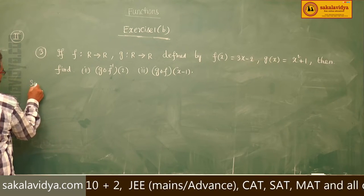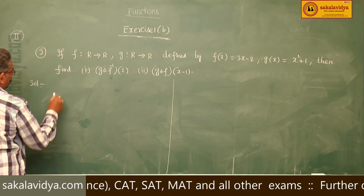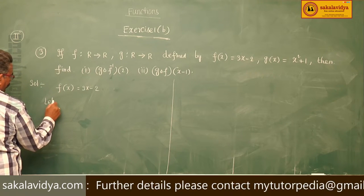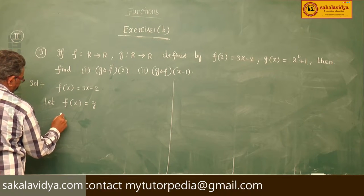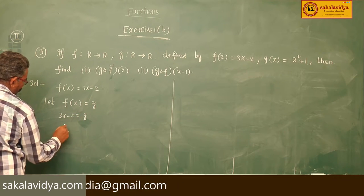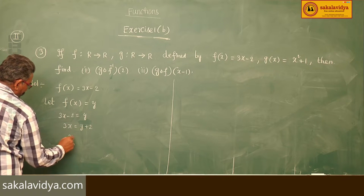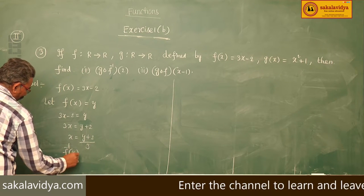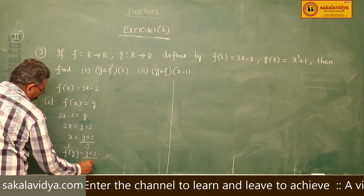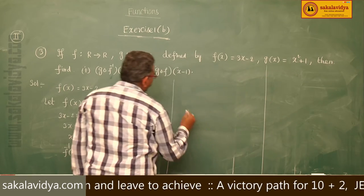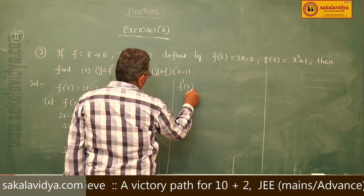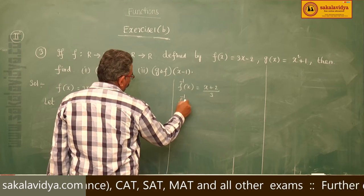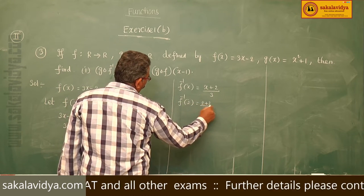First let us find F inverse. Given F(x) = 3x − 2. Let F(x) = y, so 3x − 2 = y, then 3x = y + 2, so x = (y + 2)/3. This x is nothing but F⁻¹(y), so F⁻¹(y) = (y + 2)/3. Therefore F⁻¹(x) = (x + 2)/3. Now, F⁻¹(2) = (2 + 2)/3 = 4/3.